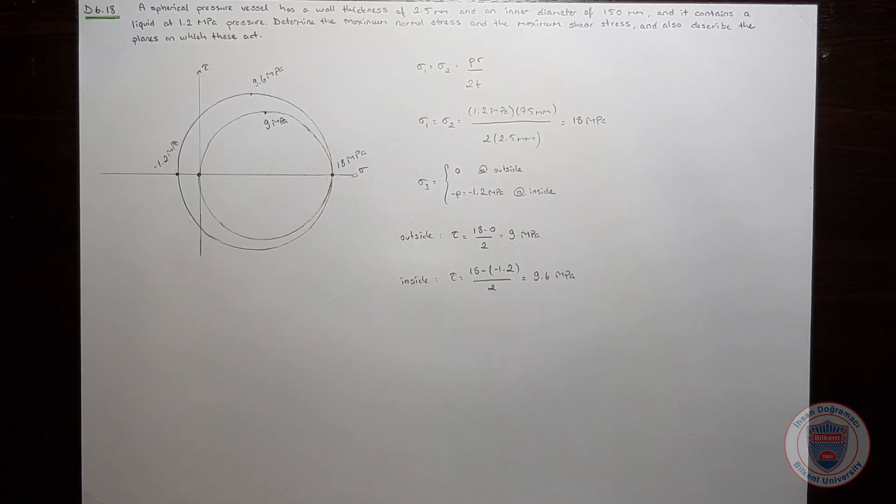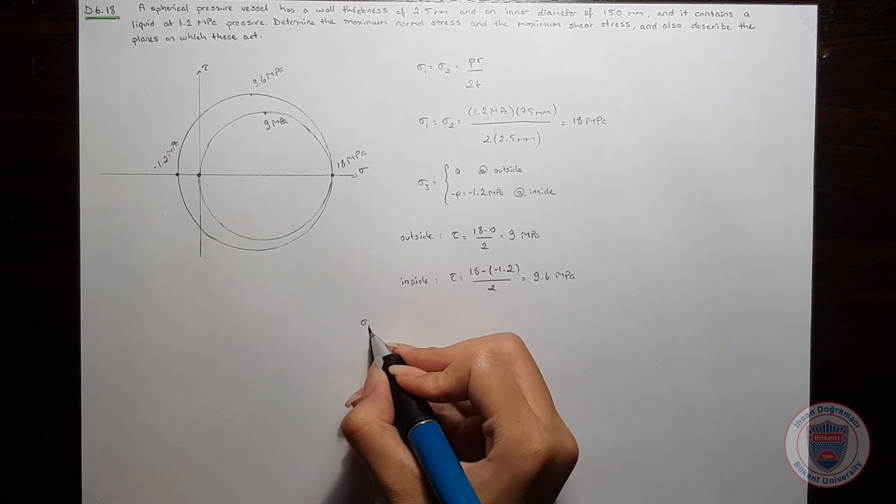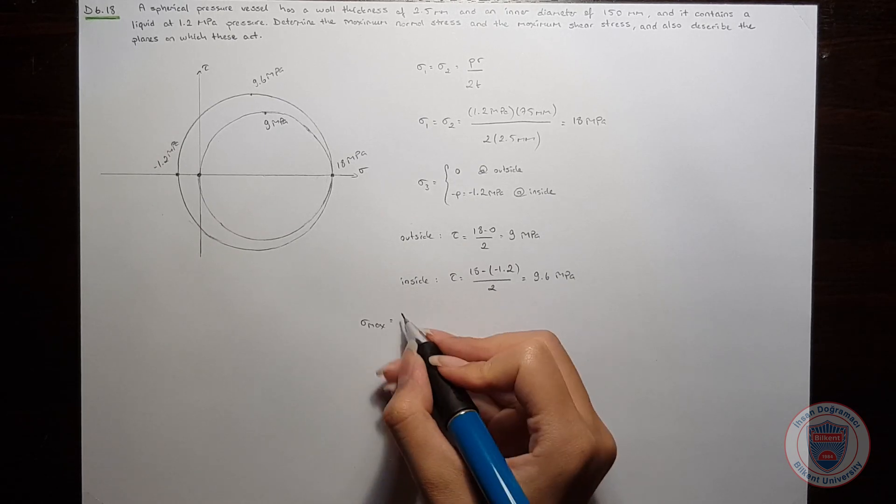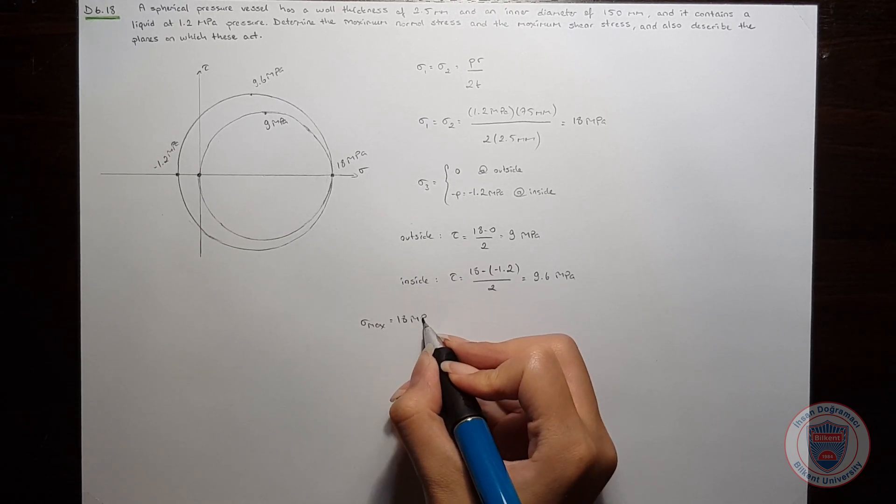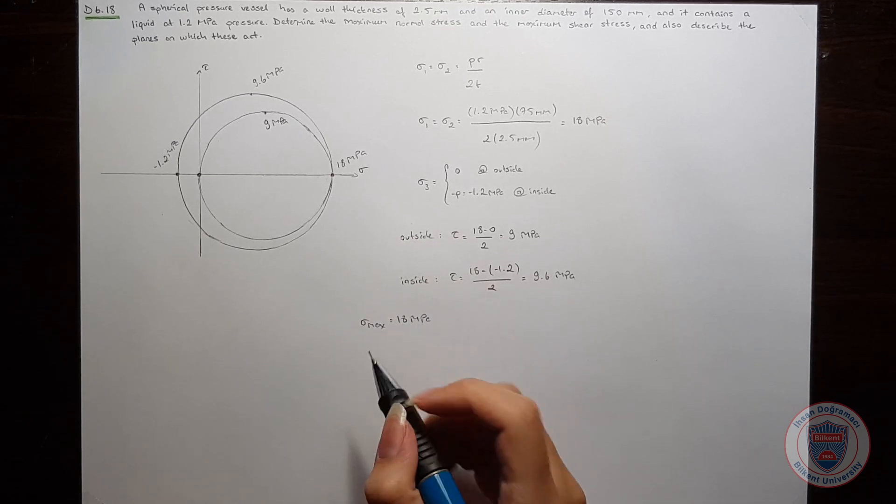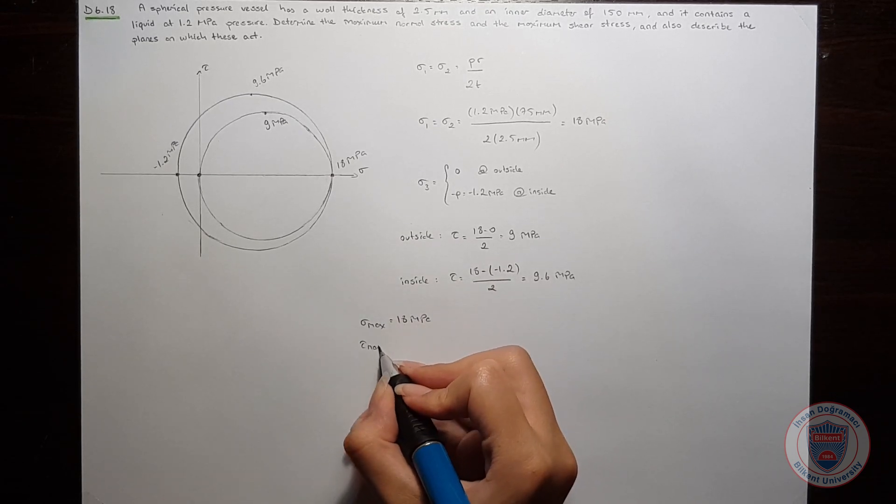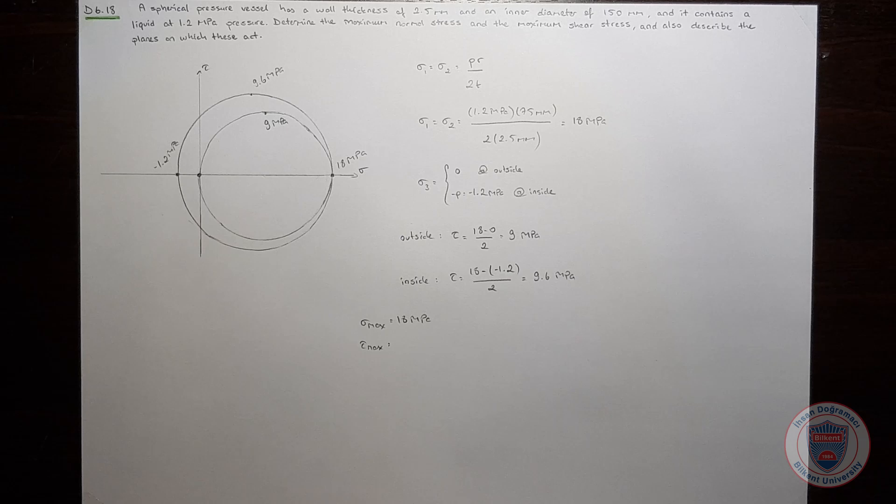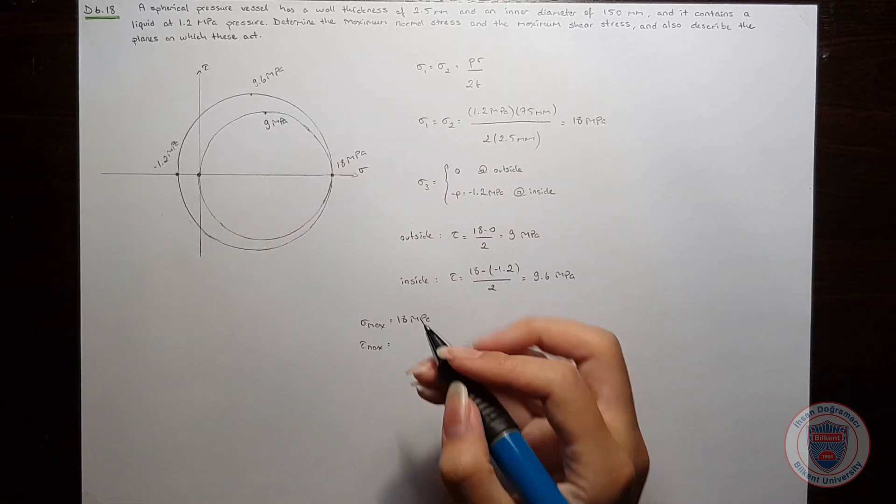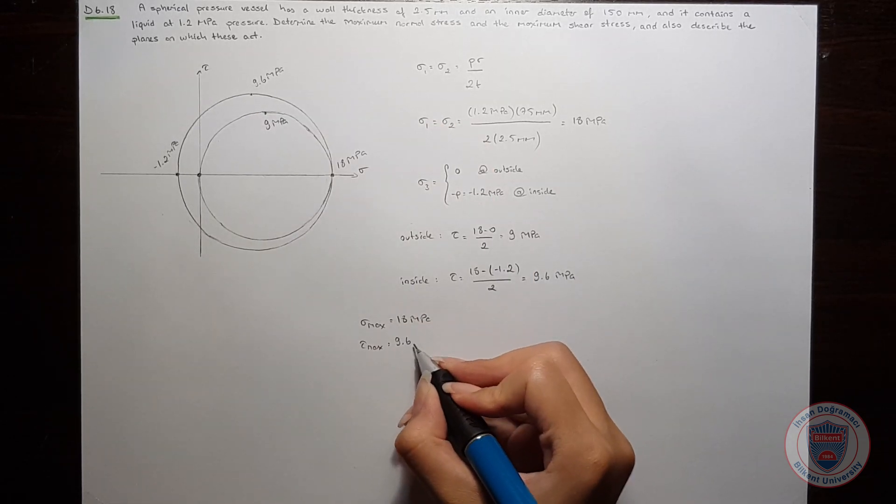As you can see, the maximum normal stress will be equal to 18 MPa, and the maximum shear stress will be on the inside and it is equal to 9.6 MPa.